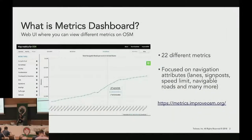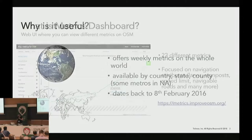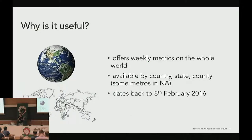So what is Metrics Dashboard? It is a web UI where you can view different metrics on OSM. There are actually 22 of them. They are mostly focused on navigation attributes, like signpost, speed limits, and turn restrictions. I also added a link where you can access it if you want to take a look. Metrics Dashboard offers weekly metrics on the whole world. It's available by country, county, states, and even some of the metros. It dates back to February 2016.